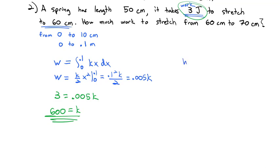Notice we had to first find the stretch constant for the spring before answering our question. The question wants to know how much work to stretch from 60 to 70 centimeters. Actually, 60 is an increase of 10 centimeters, 70 is an increase of 20 centimeters. We need to change that to meters: from 0.1 to 0.2 meters. So we're integrating from 0.1 to 0.2 times our constant 600x dx.